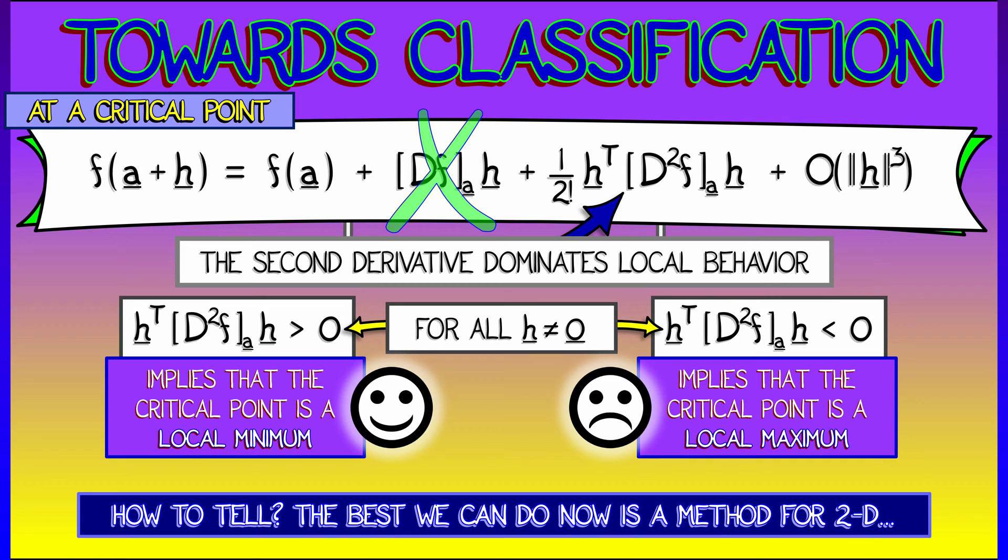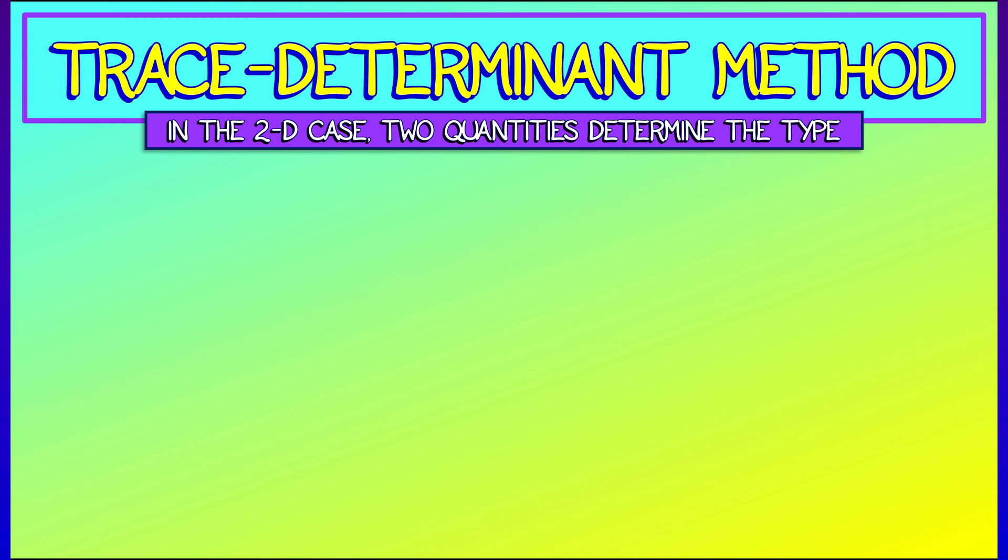Well, the real way for one to tell is to use something called eigenvalues, which we have not and will not learn. But, if you want something that is simple, that is workable, I can tell you how to do this in 2D using something called the trace determinant method. It's a little bit of a hack, but I don't want to do eigenvalues yet. In the 2D case, there are two numerical quantities that determine the type of critical point.